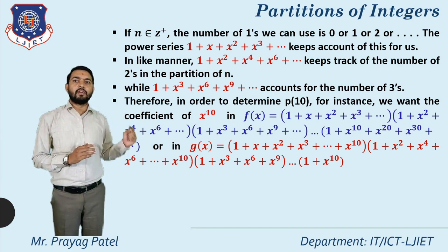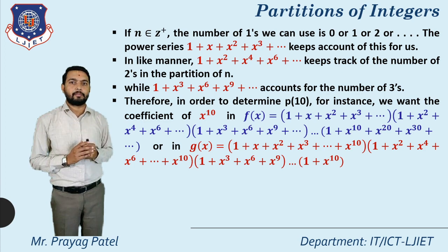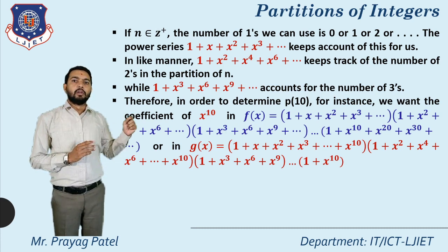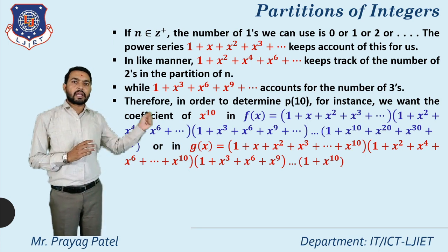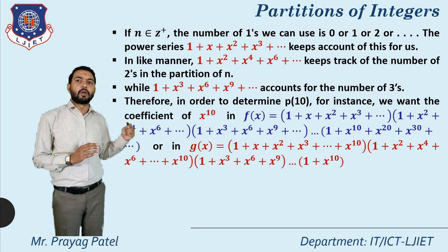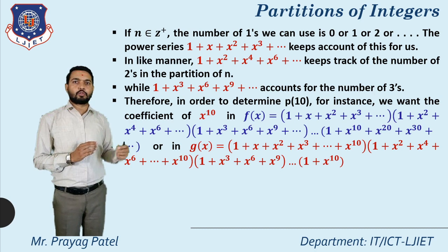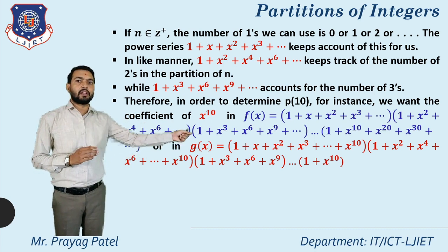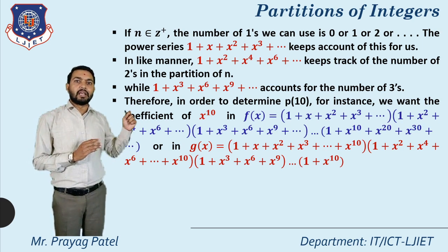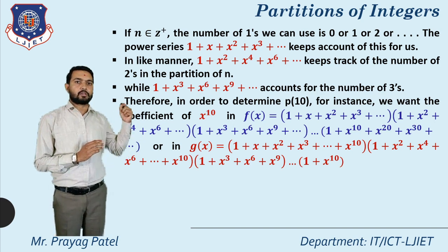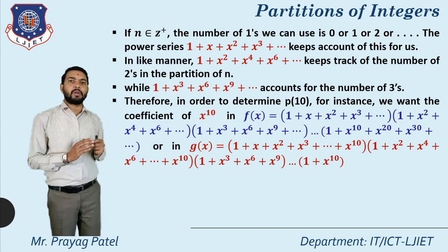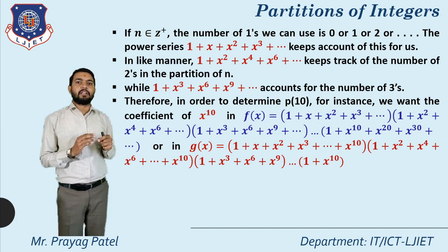To determine p(10), we want the coefficient of x¹⁰. Our function is f(x) equal to (1 plus x plus x² plus x³)(1 plus x² plus x⁴ plus x⁶)(1 plus x³ plus x⁶ plus x⁹)... up to (1 plus x¹⁰ plus x²⁰ plus x³⁰). This function f(x) represents how to find the partition of 10.